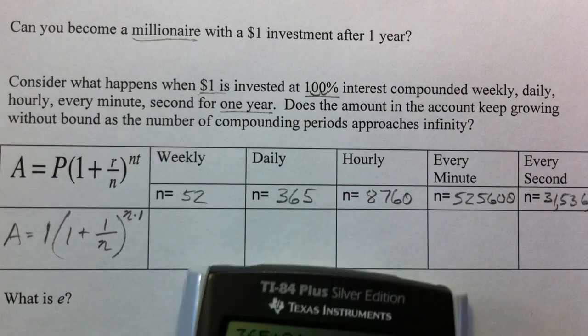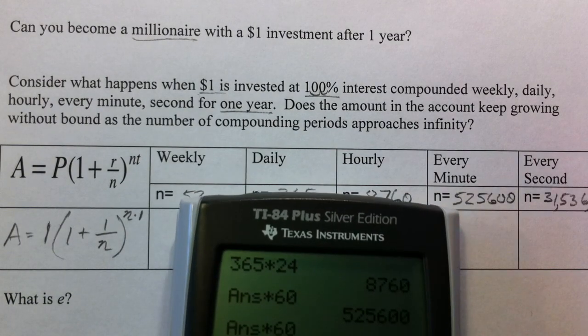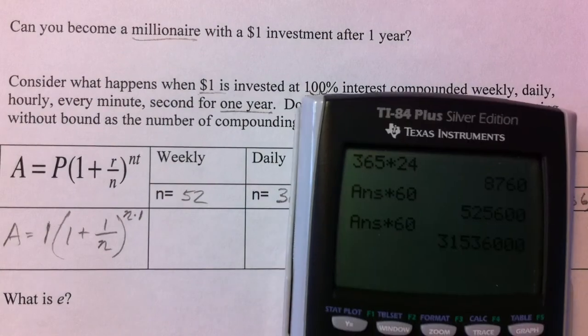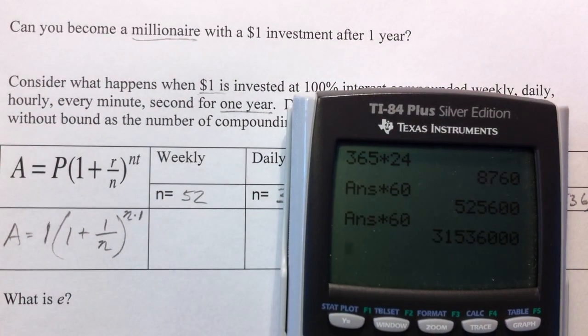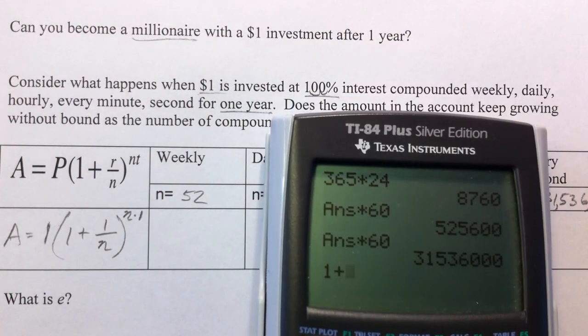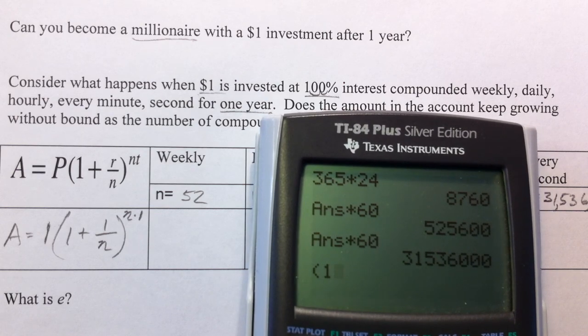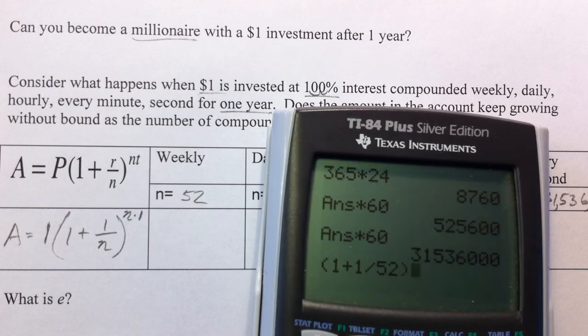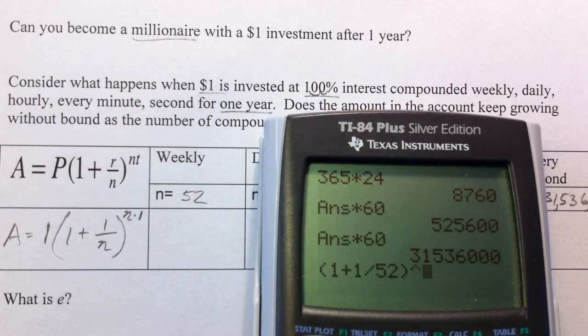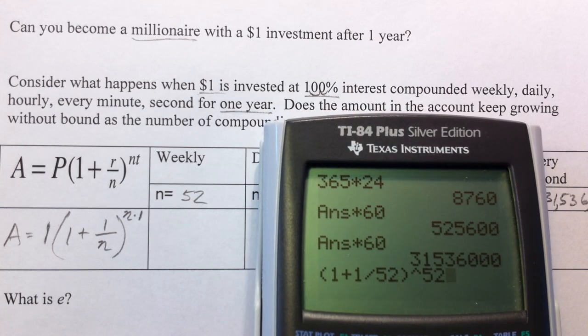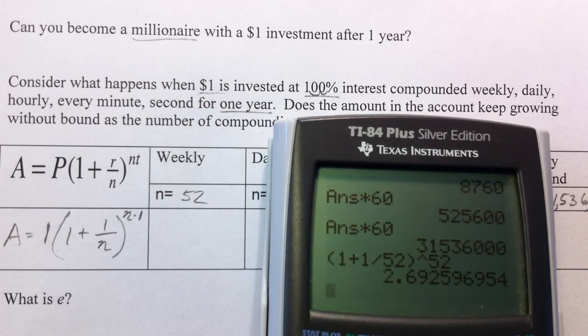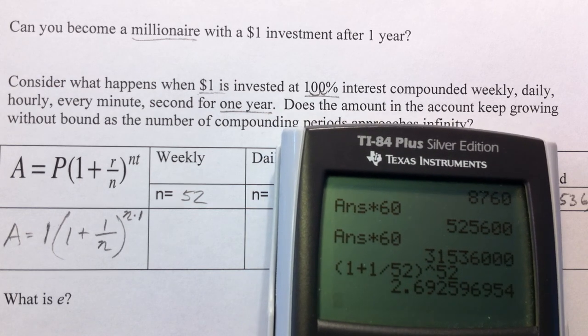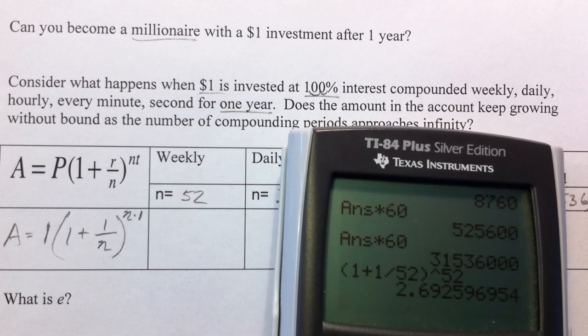So there's the 31 million seconds. And so we're going to plug this in. We're going to plug this in. 1 plus our interest rate of 1 over our 52, raised to the 52nd power. That's 2.69, 2.693.